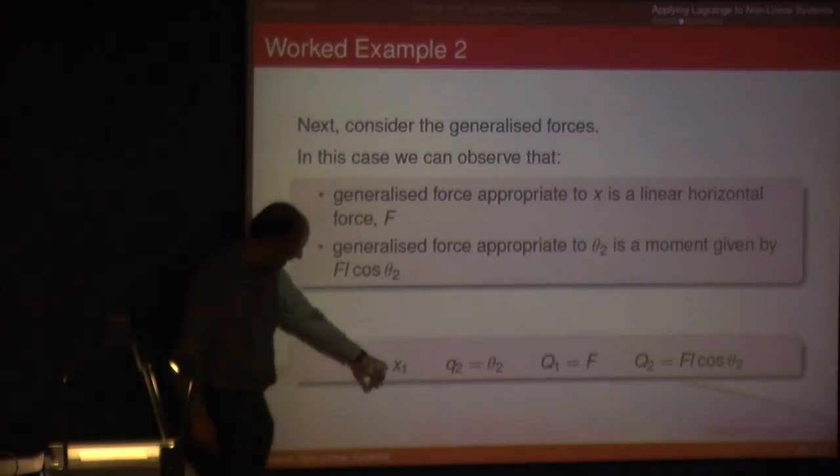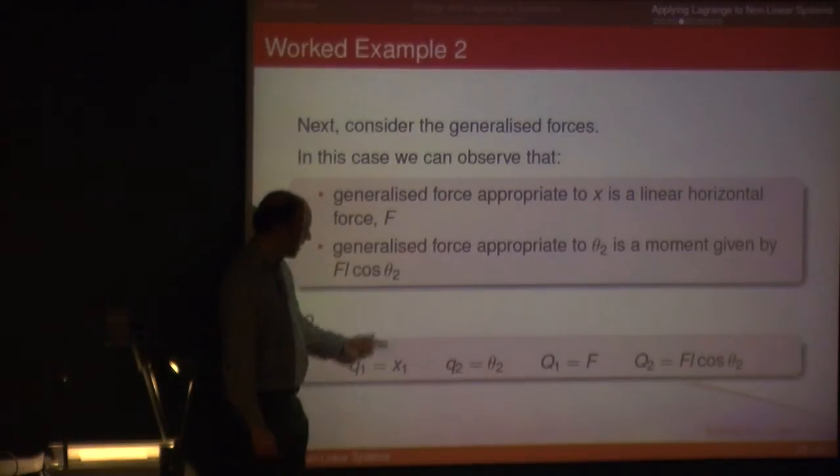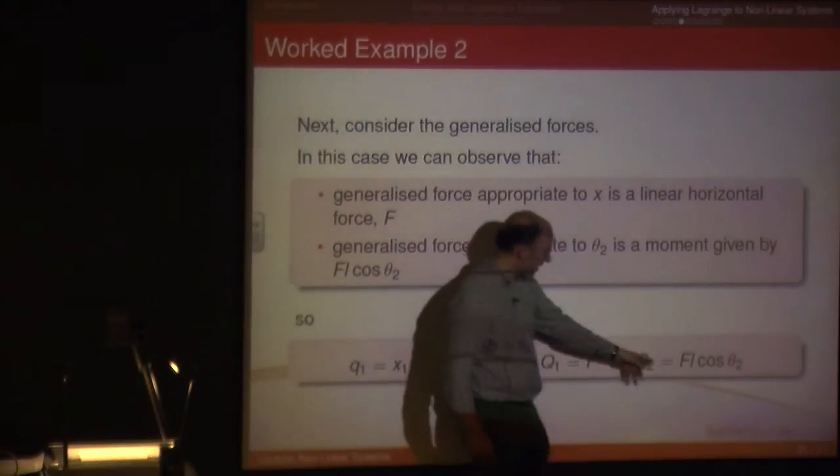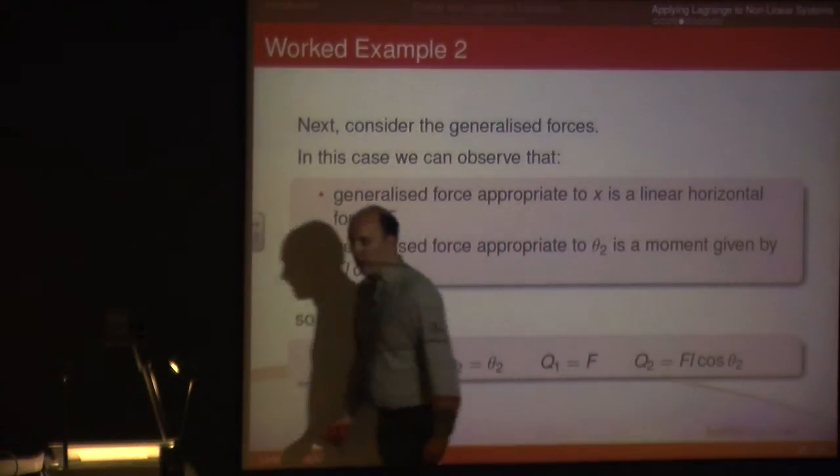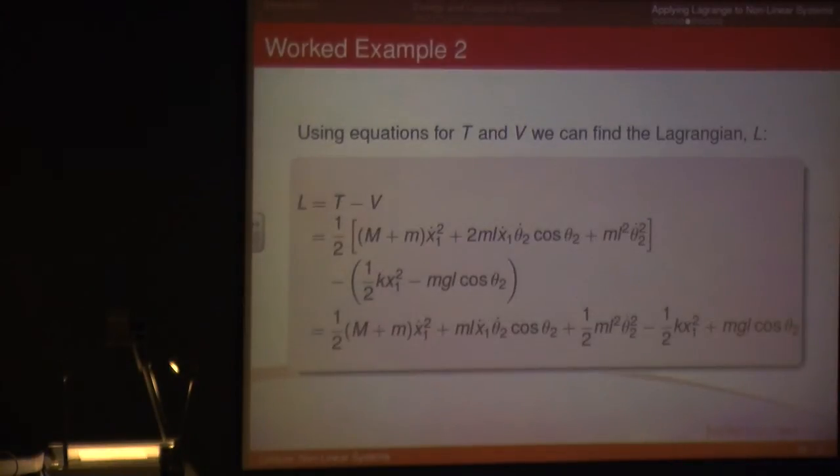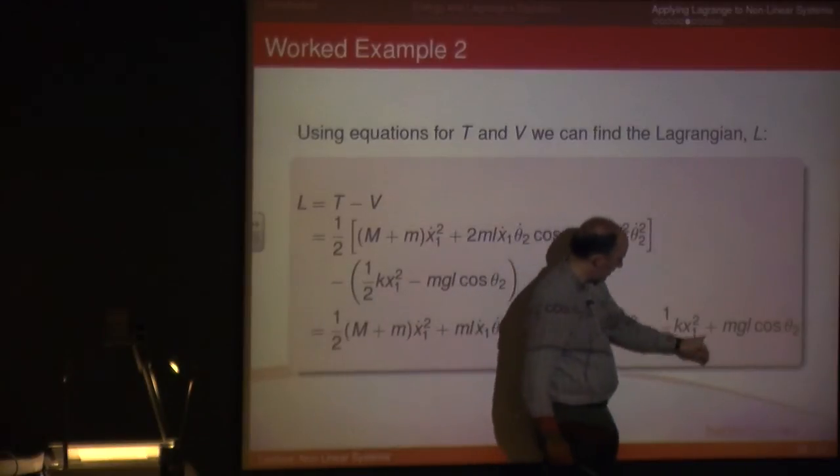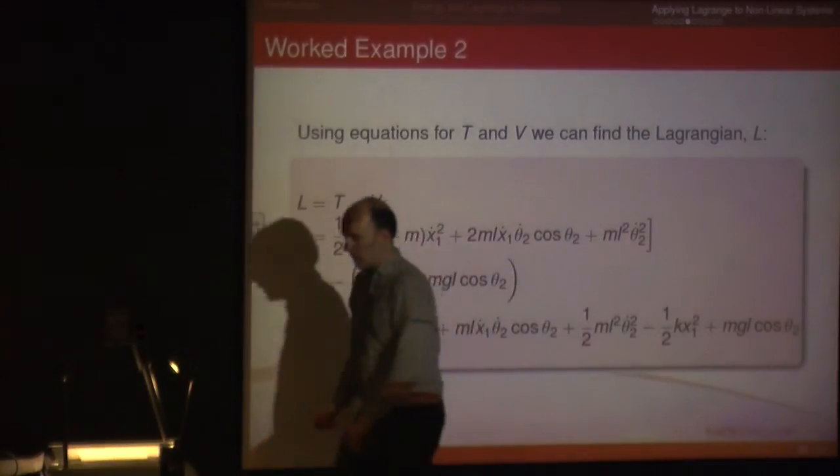If I say Q1 is X1, Q2 is C2, which is perhaps why I gave this 1 and 2 subscripts. Big Q1 is going to be my force, because that's this 1, and big Q2 is going to be that moment that's being created by that force. So L, T minus V. Well, there's my T term, there's my V term, and then obviously I've just written it out in long form, taking out these brackets. So this becomes minus 1 half KX1 plus MGL cosine of theta.